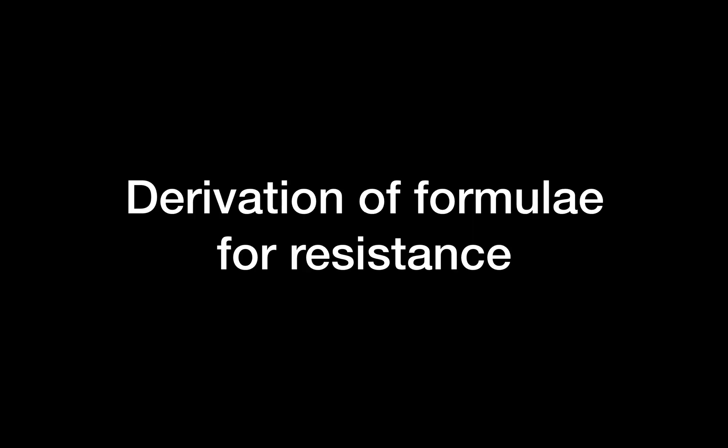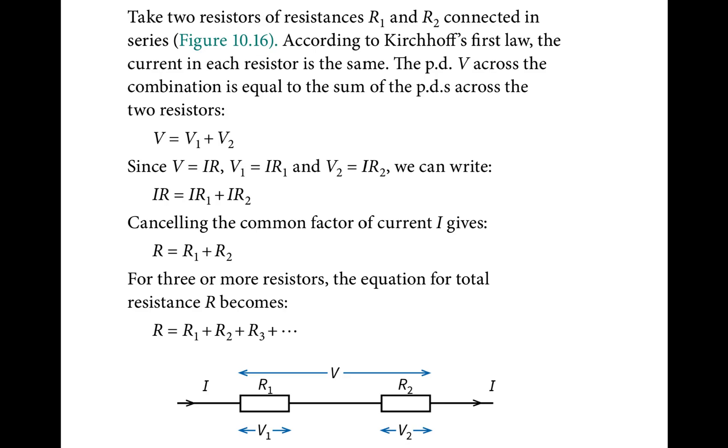Now we cover the derivation of resistance formulae. In a series circuit, all resistances are added together to get total resistance. In a parallel circuit, we add the inverses and then invert the sum. The origin of these formulae comes from Kirchhoff's laws. For two resistors R1 and R2 in series, the current is constant and the total voltage equals V1 plus V2.